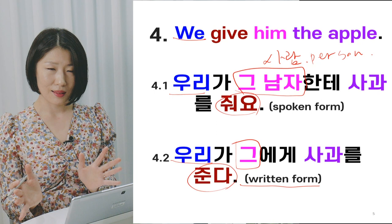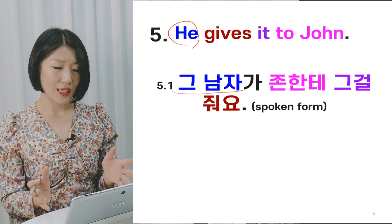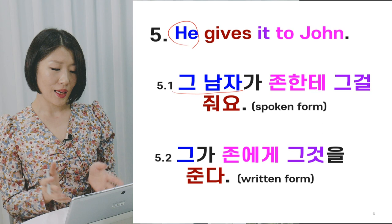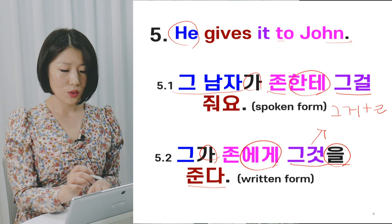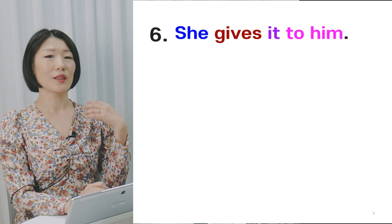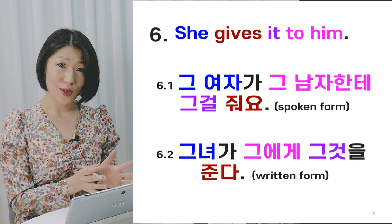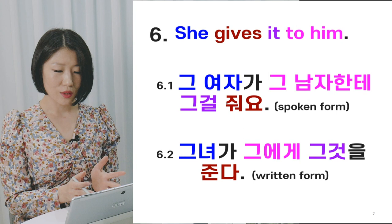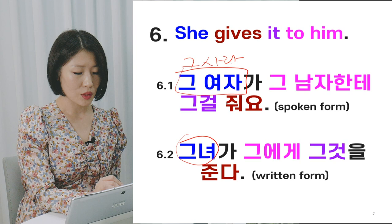The next sentence is 'He gives it to John.' Spoken: 그 남자가 존한테 그걸 줘요. Written: 그가 존에게 그것을 준다. 그것을 is shortened to 그걸 — 그것 plus the object particle 을, where the final consonant ㄹ combines to make 그걸. For 'She gives it to him' — spoken: 그 여자가 그 남자한테 그걸 줘요. Written: 그녀가 그에게 그것을 준다. Like 그 for 'he,' 그녀 is the written translation for 'she,' but in spoken style we say 그 여자 (that woman) or 그 사람.